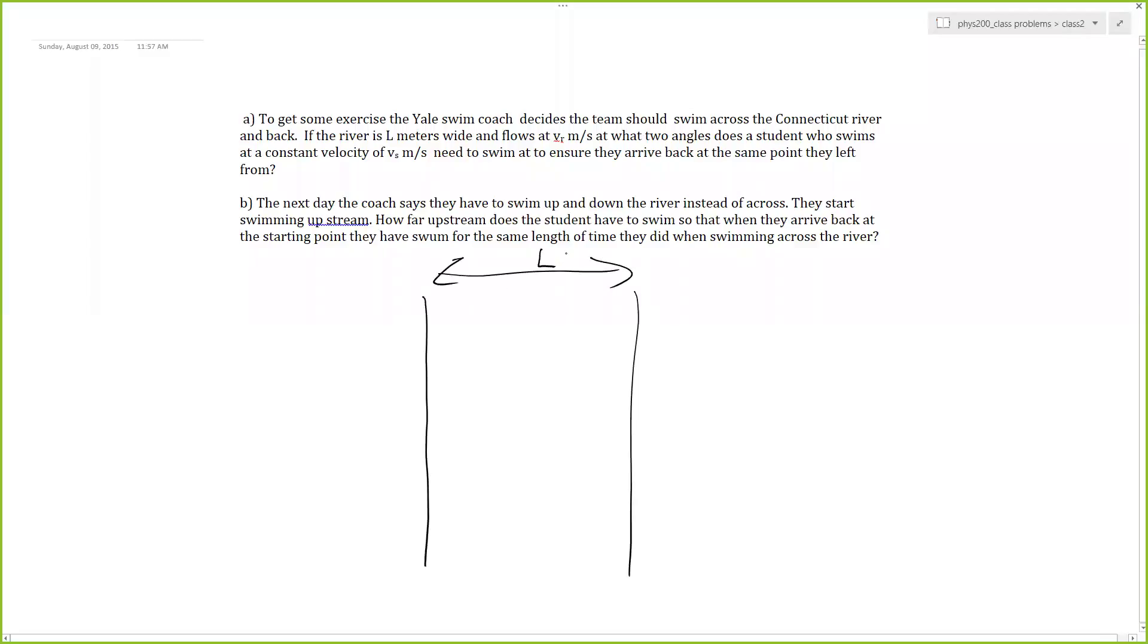So let's draw the river. The river has a length L. If the river is L meters wide and flows at—so this is going to be the Vr, the flow rate of the river—what two angles does a student who swims at a constant velocity of Vs need to swim to get back to the same point?